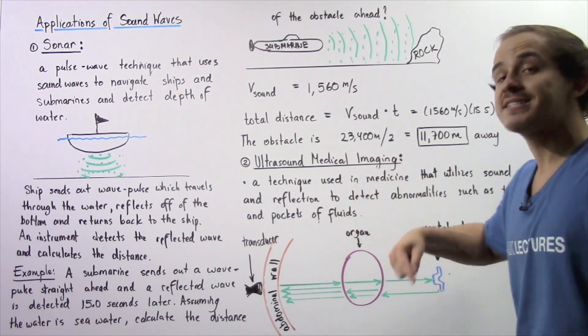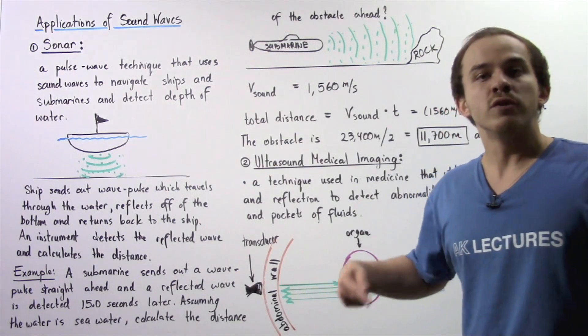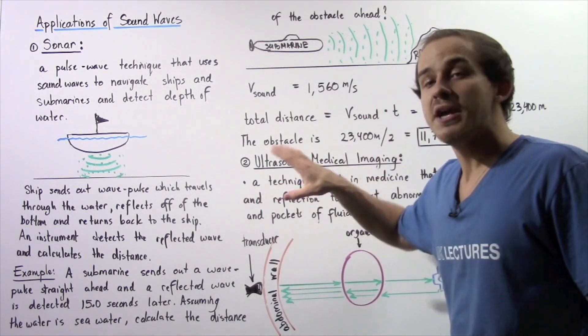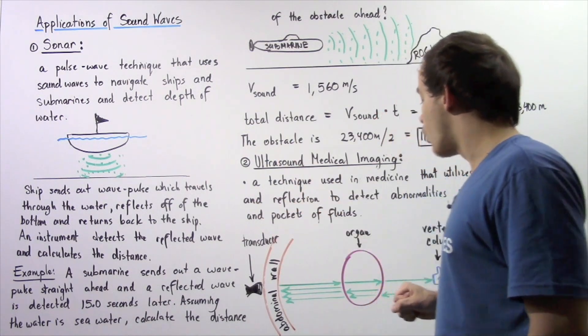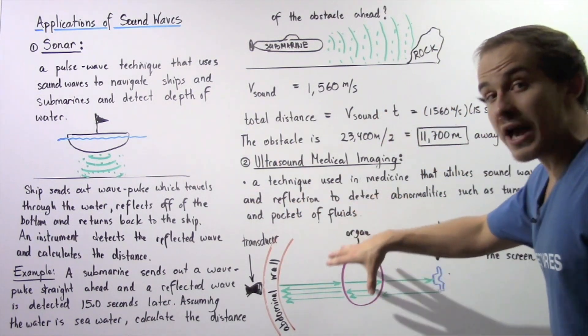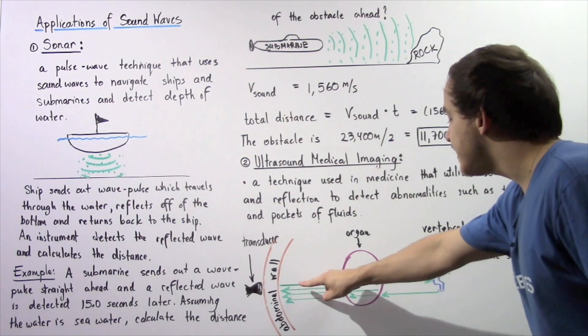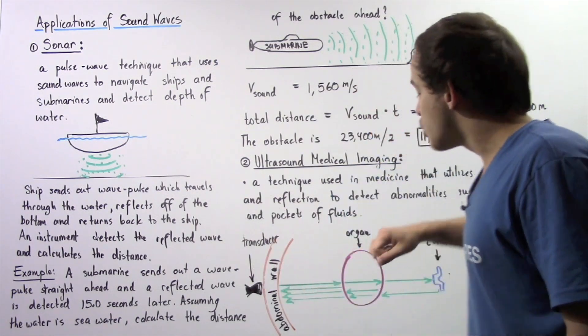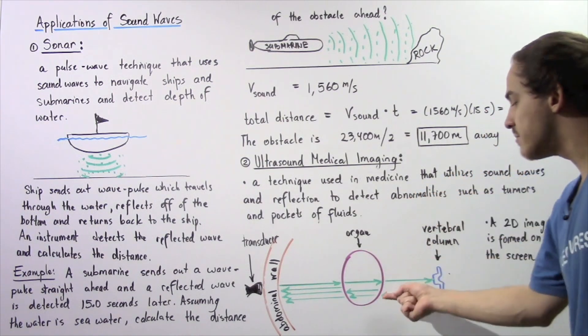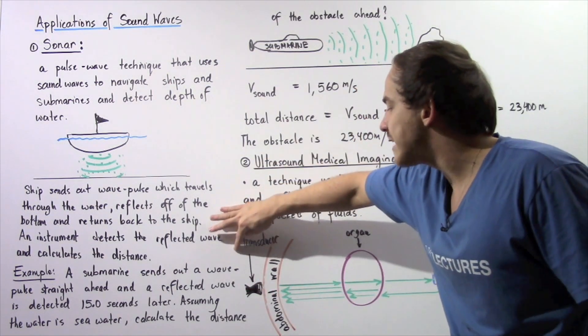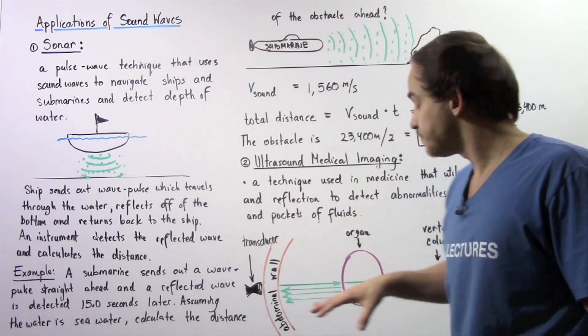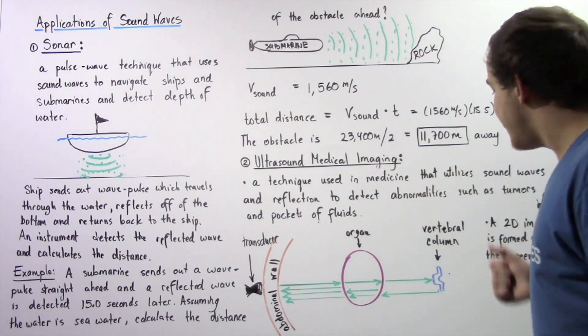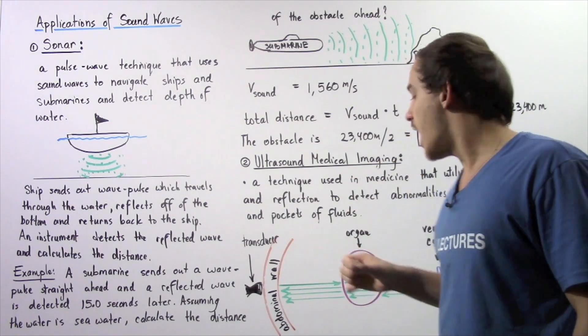Once it hits an organ, some of that sound wave reflects and travels back to our transducer, and the transducer picks that reflected wave up. The rest of that wave continues traveling onward until it hits another section of the organ. Once it hits this section, some of that is reflected back and travels back to the transducer. The rest continues traveling onward until it hits the last possible object.